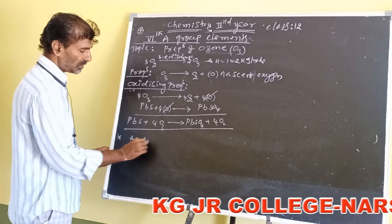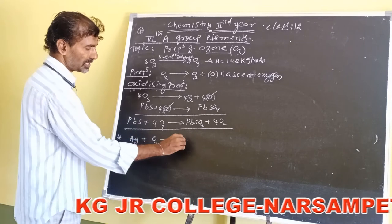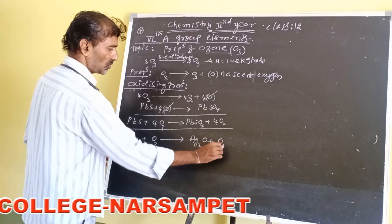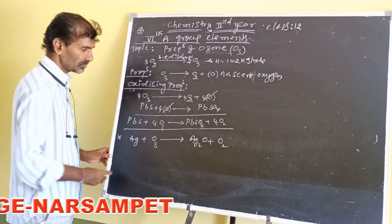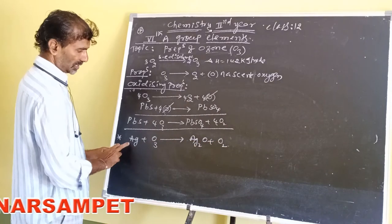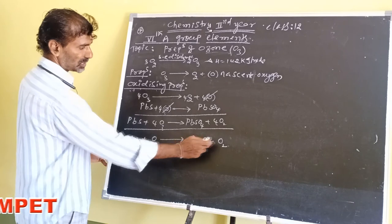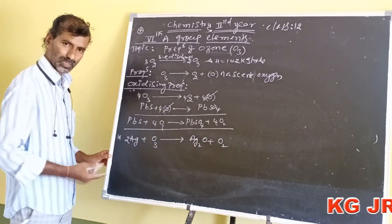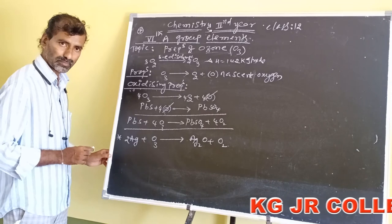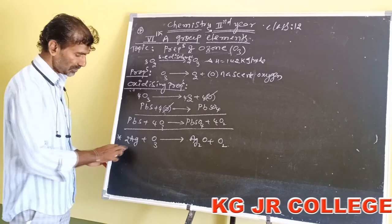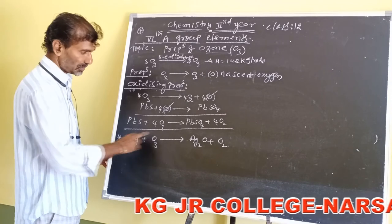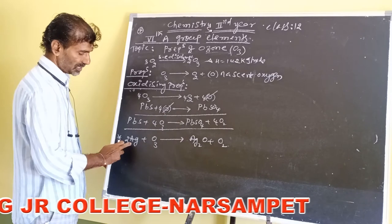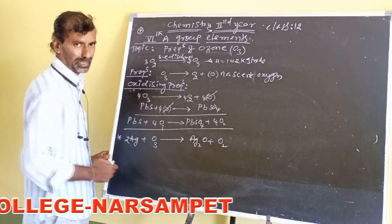Second oxidizing property: silver plus O₃ gives Ag₂O plus O₂. Here O₃ oxidizes 2 moles of silver to silver oxide. So ozone oxidizes silver to silver oxide.